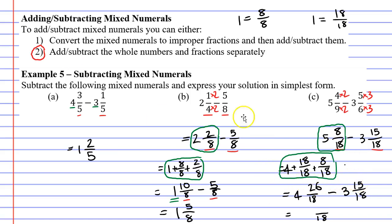What is 26 minus 15? Well this gives me 11. Okay, and now that I've subtracted my fractions I can now subtract my whole numbers. 4 minus 3 gives me 1, and this is my final solution: 1 and 11 over 18.